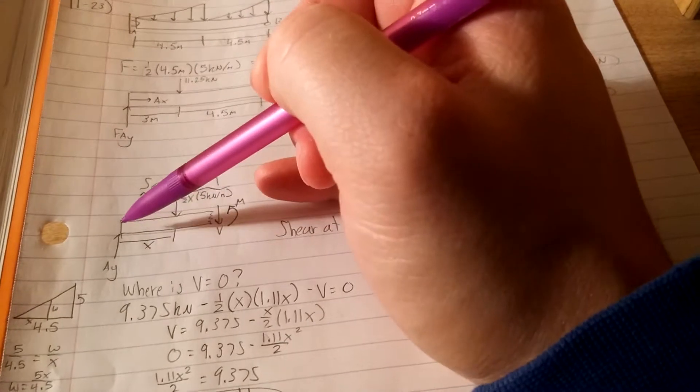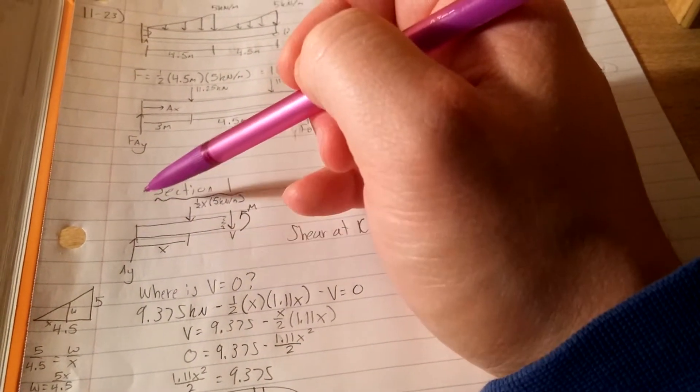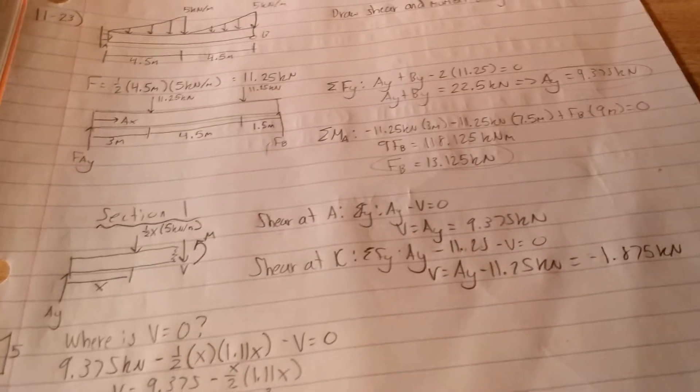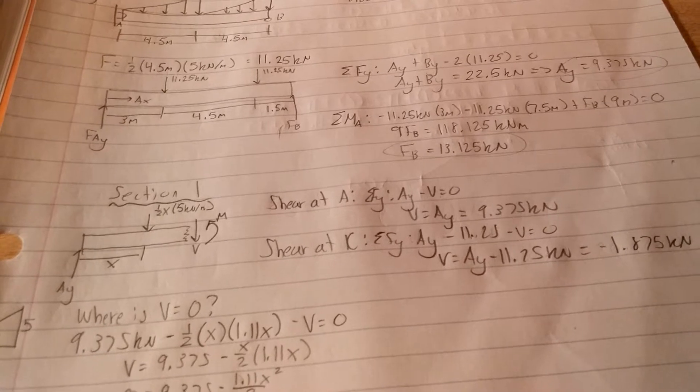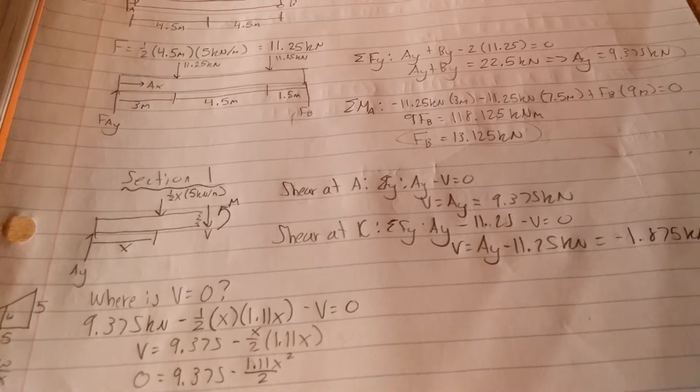Shear at A - if we take it and we're going to cut it right here, our only two forces are going to be AY up and V down. So AY minus shear equals zero. So your shear is actually equal to your reaction force at AY, and that's 9.375 kilonewtons.